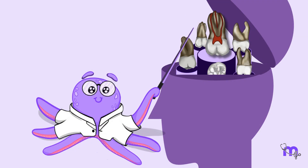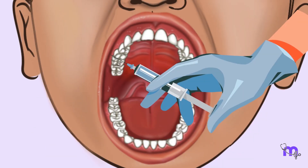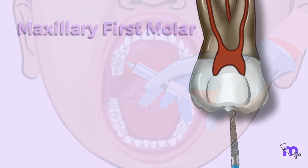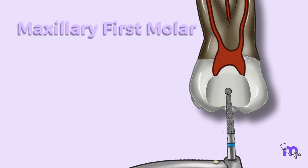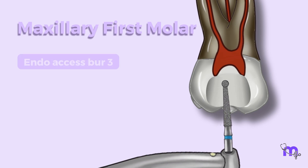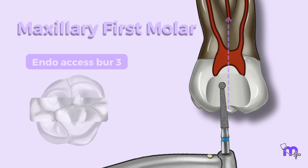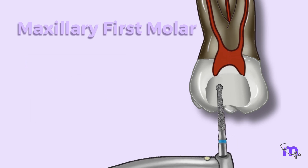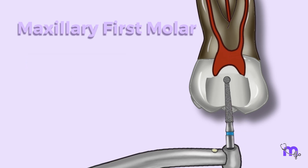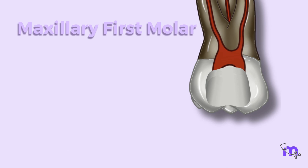Keeping this anatomy in mind, I began the access opening after injecting local anesthesia. I removed the enamel and the previously placed restorative material with an endo-access bur in the central fossa, angling it towards the palatal root. After this, I continued to go deeper and simultaneously enlarged the cavity to feel the drop.